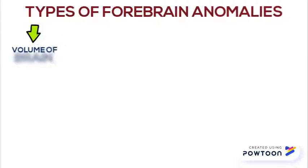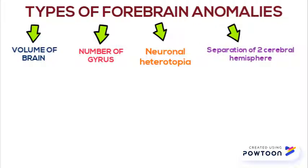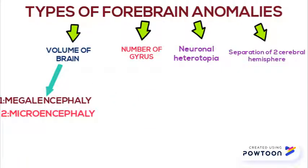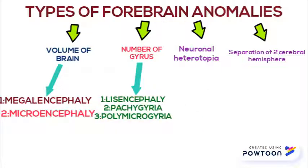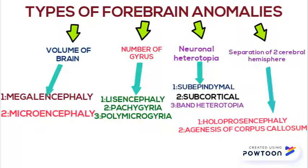Forebrain anomalies are divided on the basis of: volume of brain, number of gyri, neuronal heterotopia, and separation of the two cerebral hemispheres. On the basis of brain volume: megalencephaly and microcephaly. On the basis of number of gyri: lissencephaly, pachygyria, and polymicrogyria. Neuronal heterotopia is divided into subependymal, subcortical, and band heterotopia. Separation anomalies include holoprosencephaly and agenesis of the corpus callosum.